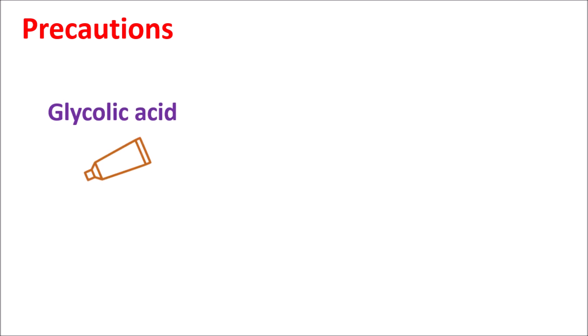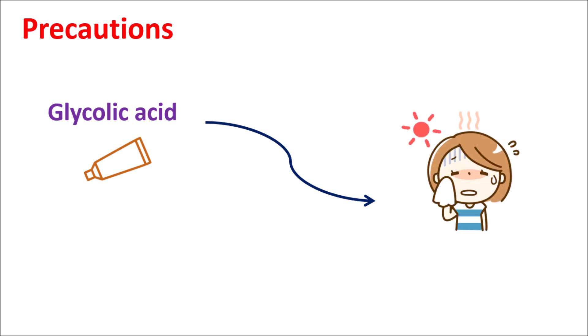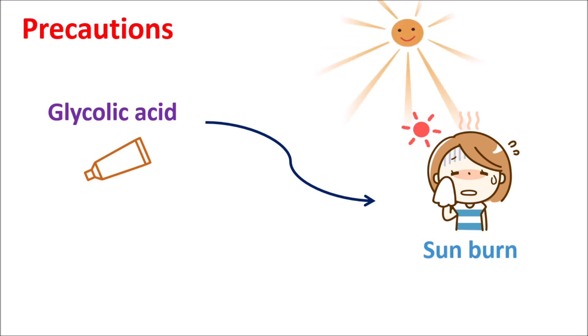Another important precaution is that glycolic acid, as an exfoliating agent, can reduce skin thickness. If used at higher concentrations for longer periods, skin thickness may be slightly reduced, which may increase the risk of sunburn when exposed to sunlight. That is why with long-term use of glycolic acid, you should avoid direct exposure to sunlight to prevent sunburn and skin irritation.